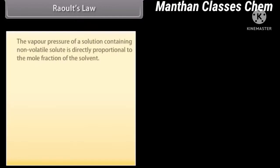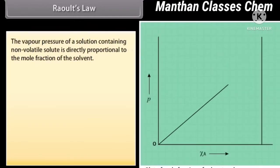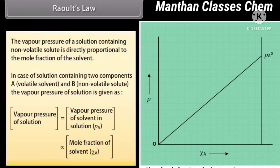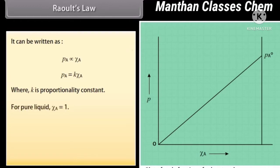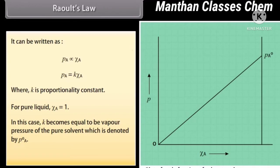Raoult's Law: The vapor pressure of a solution containing non-volatile solute is directly proportional to the mole fraction of the solvent. For a solution containing a volatile solvent and non-volatile solute, the vapor pressure is given as Pa = K × XA. For pure liquid XA = 1, so K equals the vapor pressure of the pure solvent, denoted P°A. Thus Pa = P°A × XA. For solutions obeying Raoult's law at all concentrations, vapor pressure varies linearly from 0 to the vapor pressure of pure solvent.